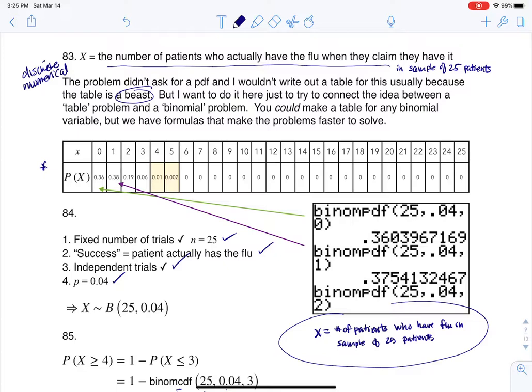Since I can check through all four of those conditions, I get to say my variable is binomially distributed, and I've got 25 trials with a probability of success of 0.04. I think it's the phrase 'distribution' that tends to mess with us for number four.